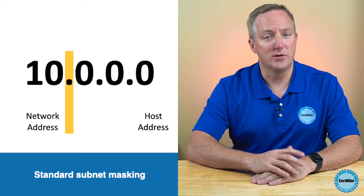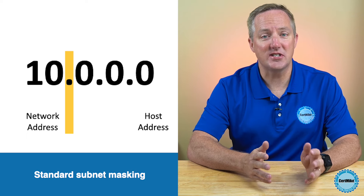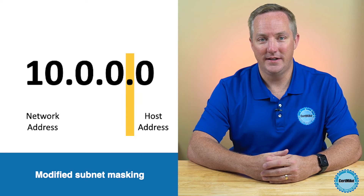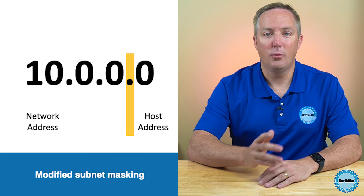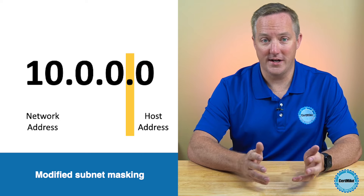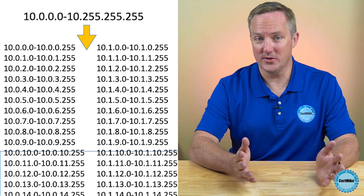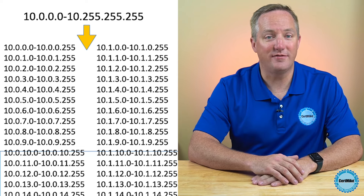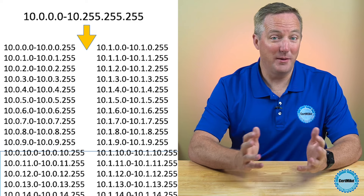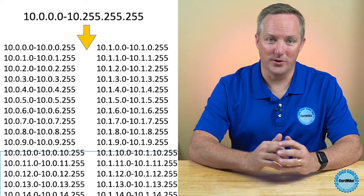The 10 IP address space normally has the dividing line between network and host addresses here, giving us a single network with over 16 million possible host addresses. If we shift the dividing line, we now have 256 possible subnetworks with 254 possible hosts each. We go from having one network with over 16 million hosts to 65,536 networks with 254 hosts each. These smaller networks are much more usable.